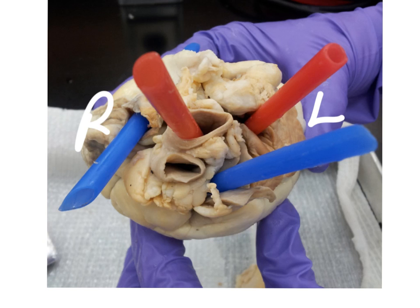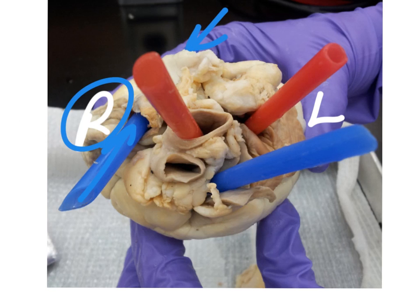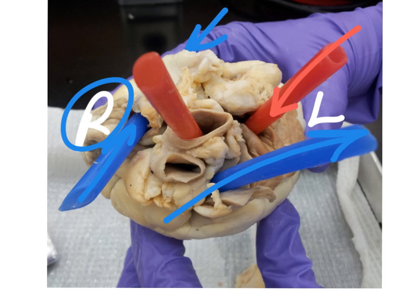Here is a superior view looking at all of the vessels. Let's follow the path of blood: it is going to come from the superior and inferior vena cavas into the right atrium, go to the right ventricle, then be pumped out the pulmonary trunk to the lungs. Oxygenated blood then returns from the lungs via the pulmonary vein, goes to the left atria, left ventricle, and then is pumped out the aorta — this is just a major branch of the aorta.